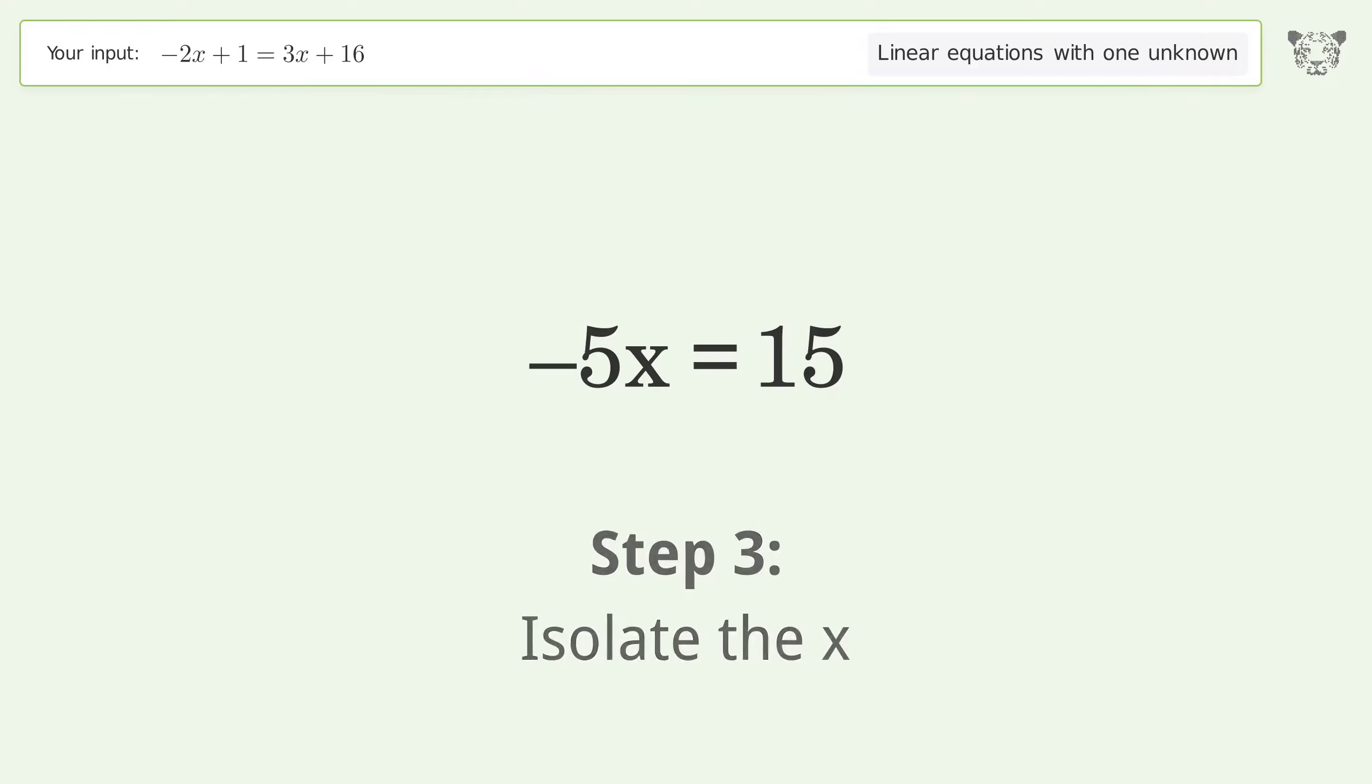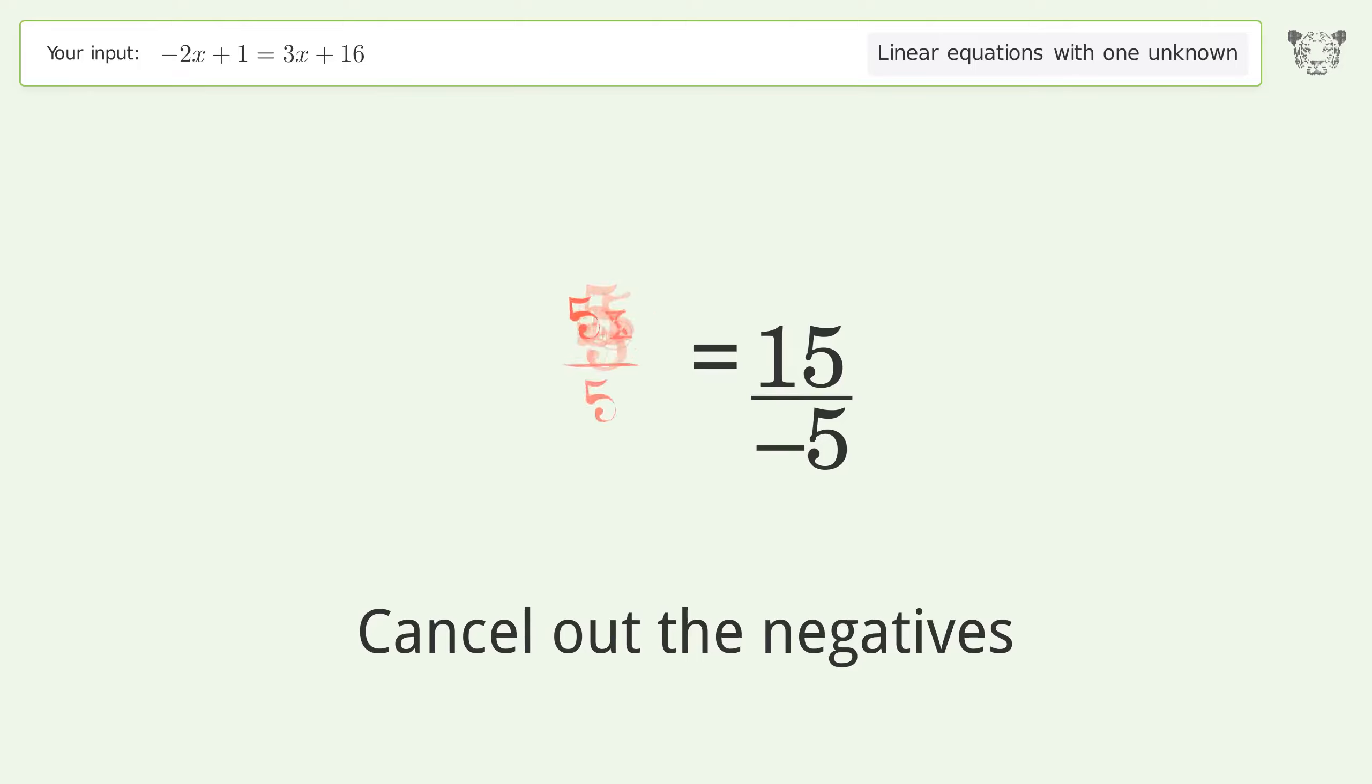Isolate the x. Divide both sides by negative 5. Cancel out the negatives. Simplify the fraction.